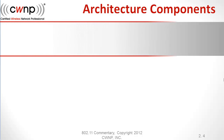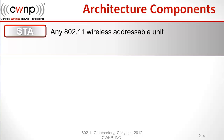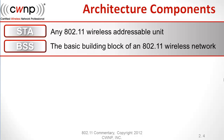Let's look at these architectural components. We begin with the basic service set and the station. The station, or STA, is any 802.11 wireless addressable unit. A station is really a logical concept and not necessarily a physical computer. A laptop or desktop computer can have multiple radios and each one of them could be a station on the wireless LAN. Then we have the basic service set, or the BSS. This is the basic building block of an 802.11 wireless network. If you're using 802.11 to communicate, you have a basic service set.